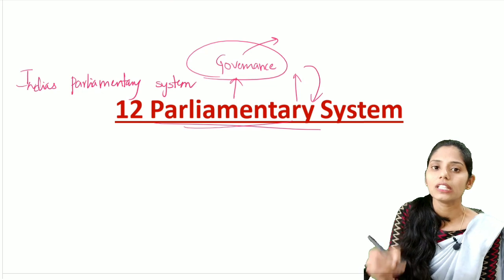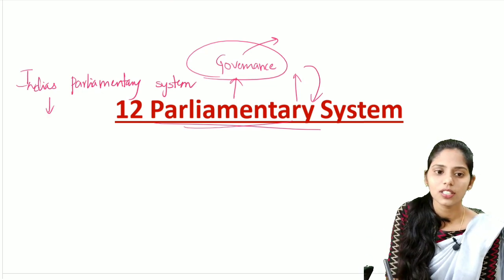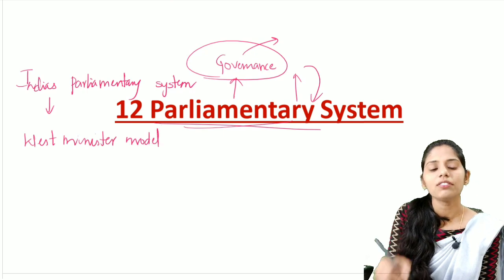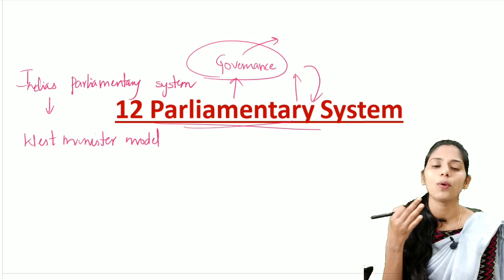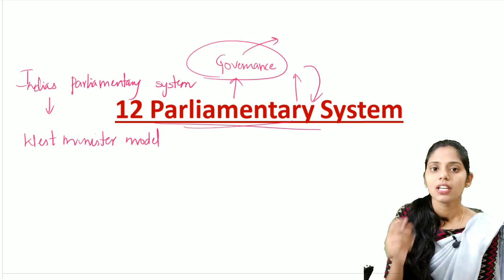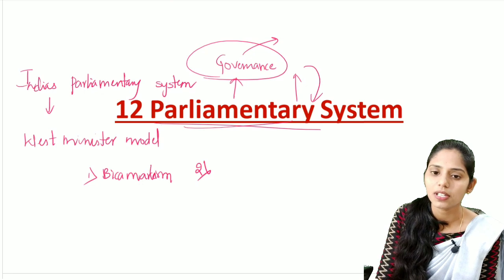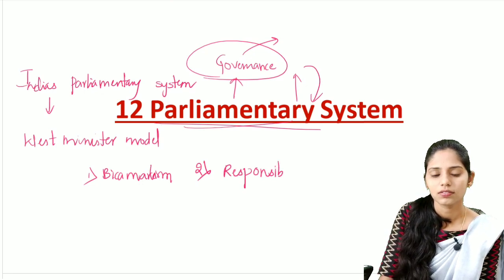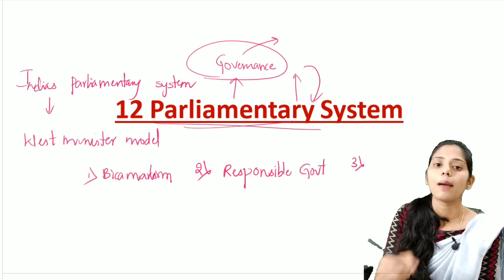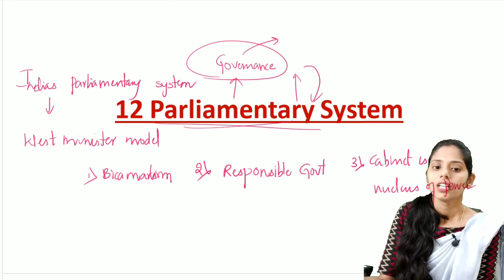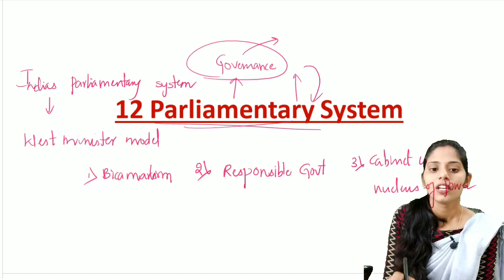India's parliamentary system is also called the Westminster model because of its place of origin. There are three important features to remember regarding the Indian parliamentary system: the first is bicameralism, the second is responsible government, and the third is the cabinet — it is the nucleus of power. These are the three important features of this parliamentary system of India.